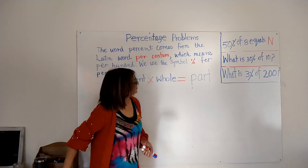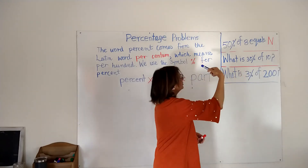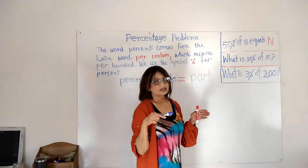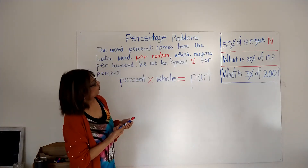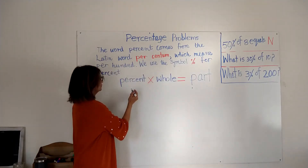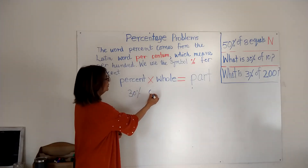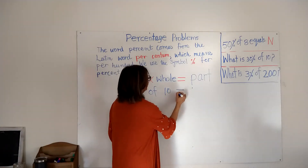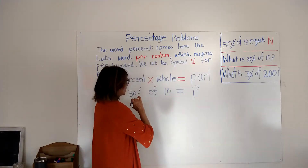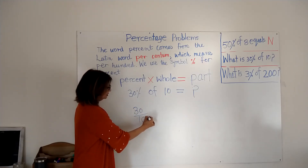The next one is: what is 30 percent of 10? The problem is written differently, but it's the same thing — we are looking for the part. So I'll write 30 under 'percent,' 'of' means times, and our whole is 10. Part is the question mark. 30 is out of 100, times our whole.